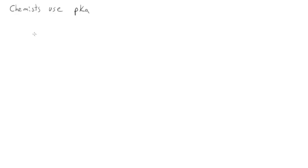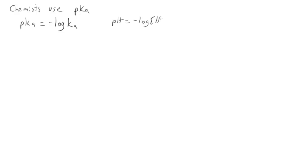Chemists use pKa a lot more often than Ka — I like to say it's because we're simple. We don't want tons of crazy exponents; we want simple numbers. So we use pKa instead. Just like with pH, pKa equals the minus log of Ka, just like pH equals the minus log of the H+ concentration. So it's a log scale. Let's see how pKa relates to Ka.